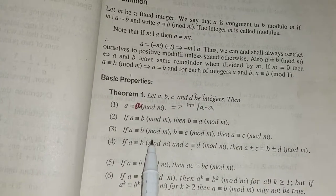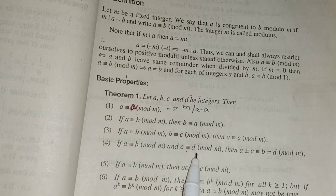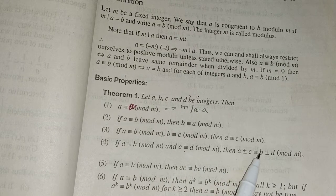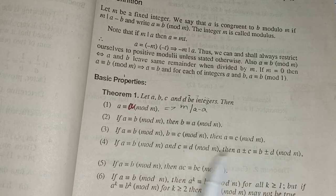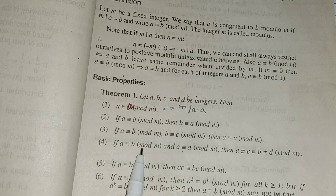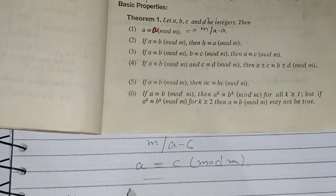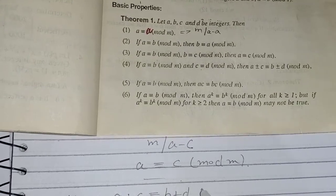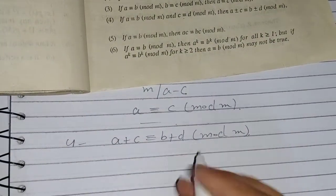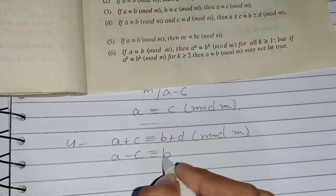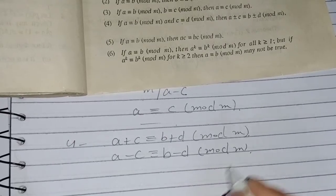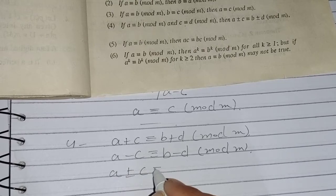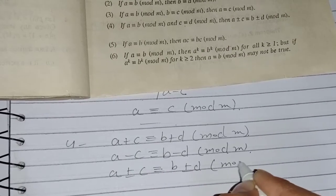Property 4 (Addition/Subtraction): If a ≡ b (mod m) and c ≡ d (mod m), then a ± c ≡ b ± d (mod m). This means we can add or subtract congruences. Specifically: a + c ≡ b + d (mod m), and a − c ≡ b − d (mod m).